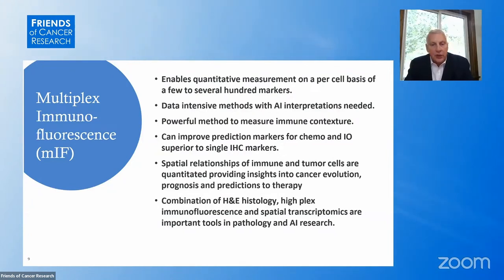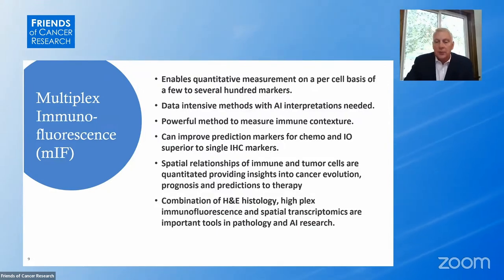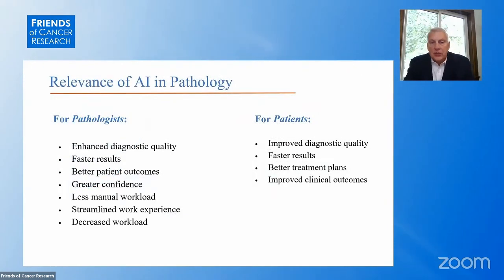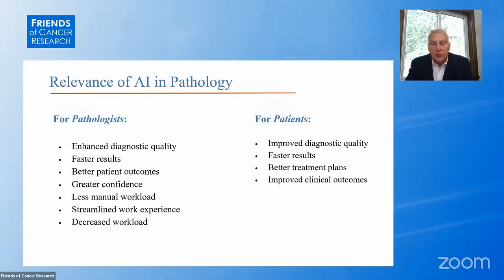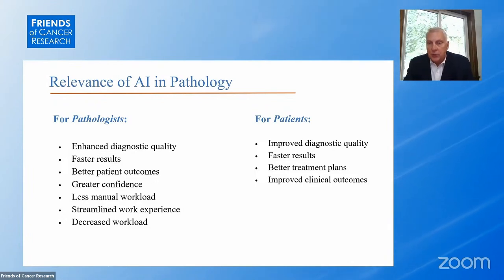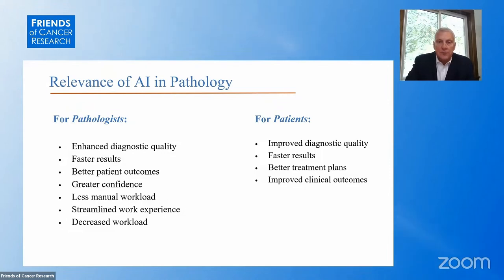The future is clearly the combination of H&E with high-plex immunofluorescence and spatial transcriptomics, which are important tools in research but also in clinical practice going forward. AI and pathology can increase quality, decrease the workload, and streamline processes. The hope is that this will lead to improved diagnosis and faster results and better treatment for patients.